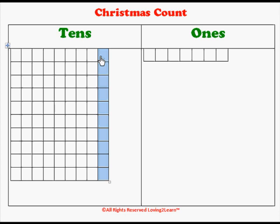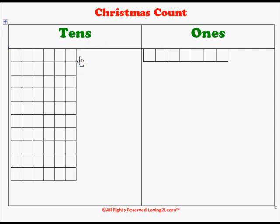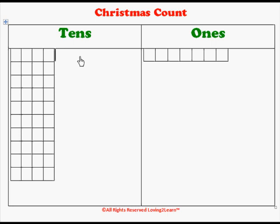We'll take some off the 10s. We have 97, 98 — that'd be 88, 78, 68, 58, 48. And then we took a one off, so we'd have 47.